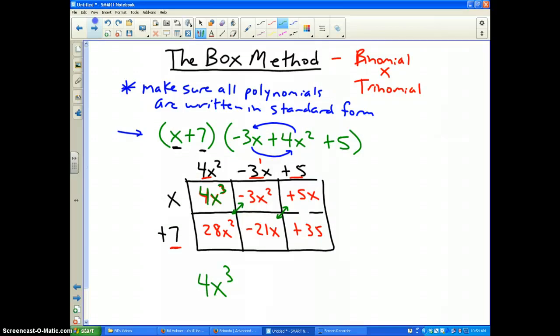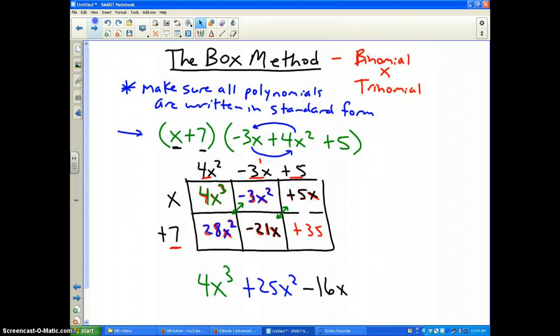And then next, I have 28x² - 3x², that's going to make +25x². And then the next one are the like terms that have x to the first power, -21x and +5x, which is going to make -16x. And then the last one is just the +35, the constant term, there's nothing to combine with it. And there you go. You're done. There's your answer.